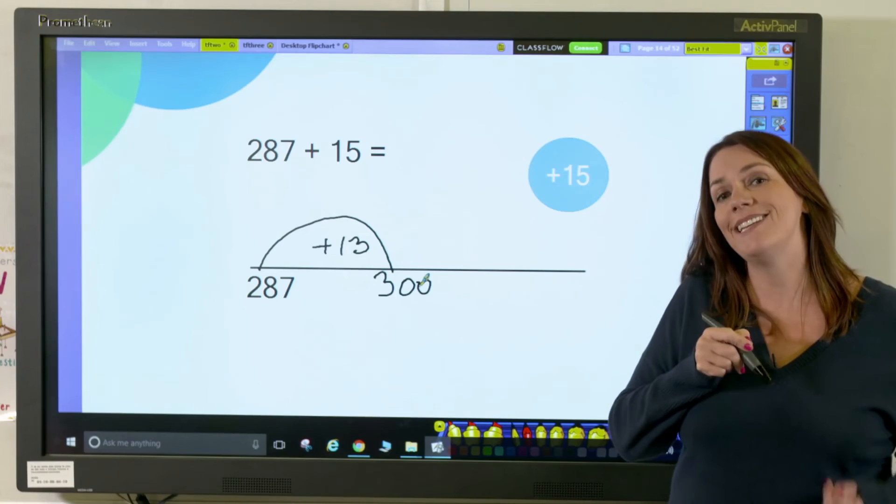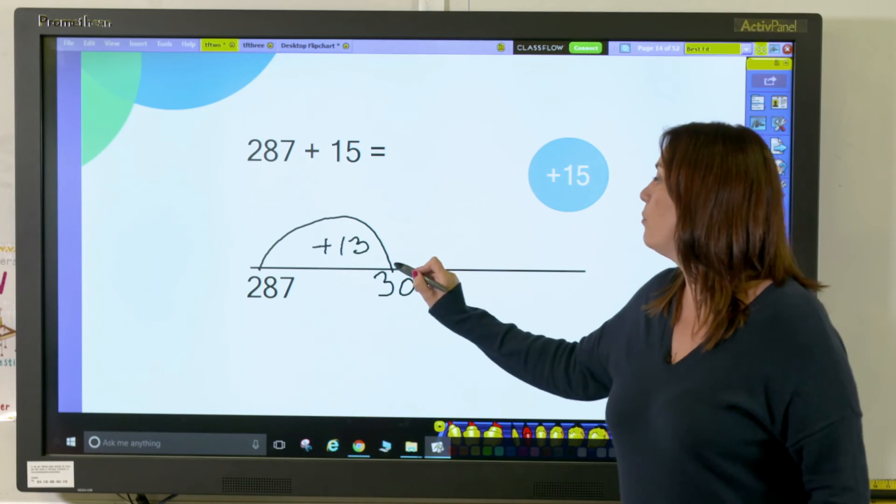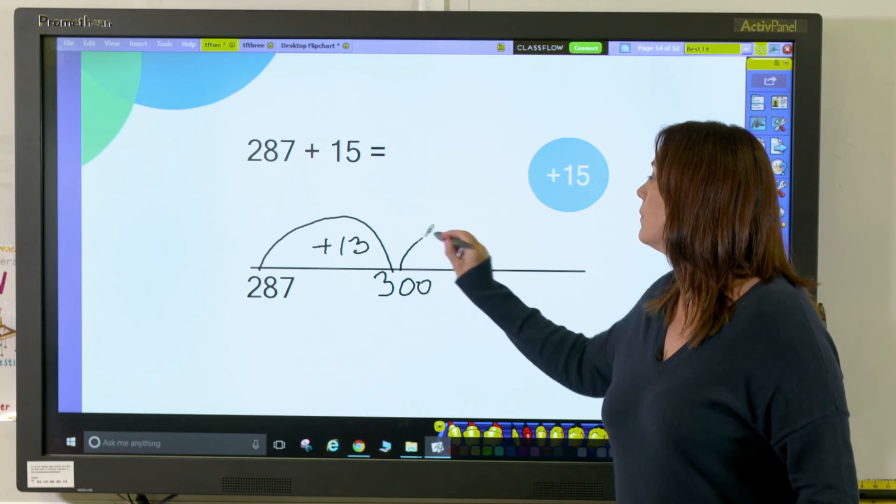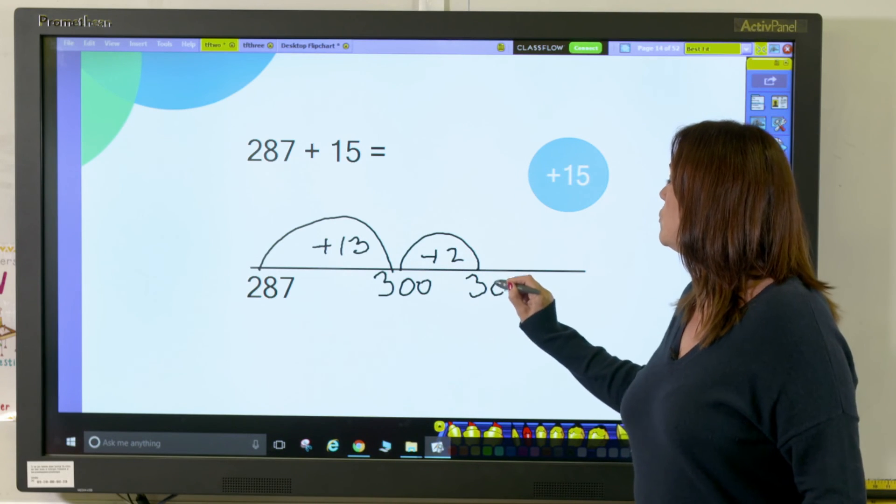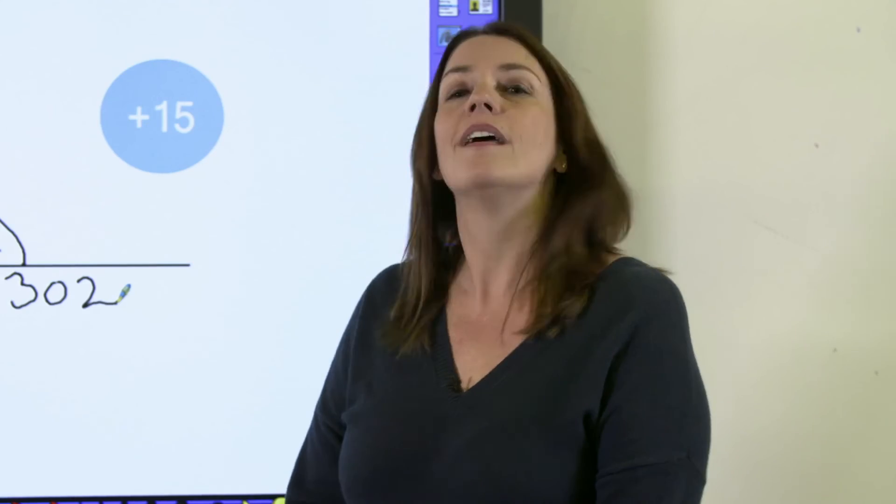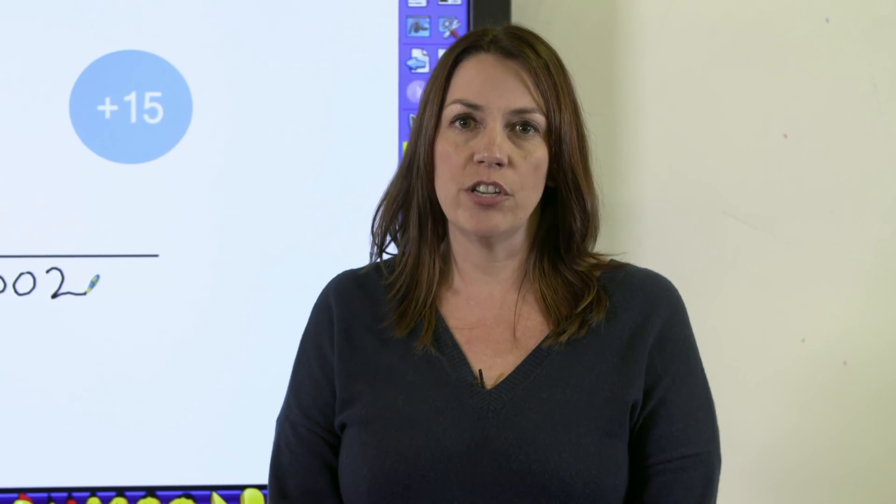To get 15, I need another 2 more, so I'm going to do a jump of 2, and that will take me to 302. And that's bridging for addition and subtraction.